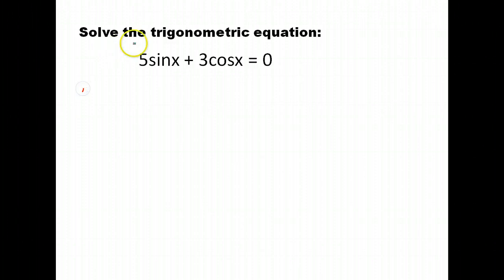All right, so here we go. Here's another. We have five sine x plus three cosine x equals zero. We want a single trig function, but there isn't an identity that does sine to cosine or cosine to sine. We have to have a square for that to happen. So instead, what we're going to do, since it's equal to zero, if I subtract three cosine x from both sides, I get five sine x equals negative three cosine x.